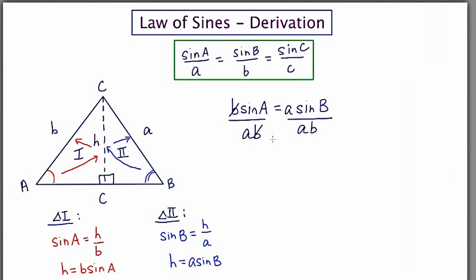When I do that, the b's cancel on the left, the a's cancel on the right, and I'm left with exactly what I want: sine A over a equals sine B over b. You'll notice that's exactly what we have written up here.